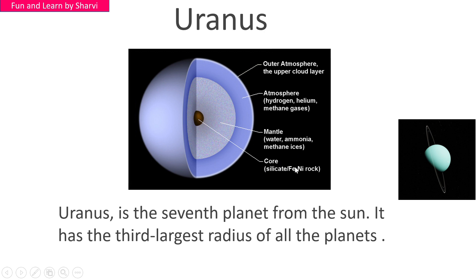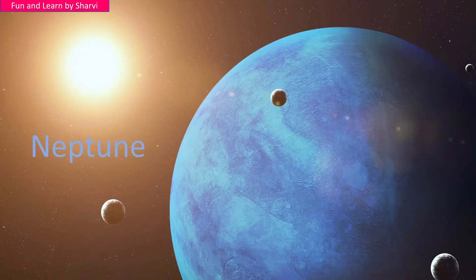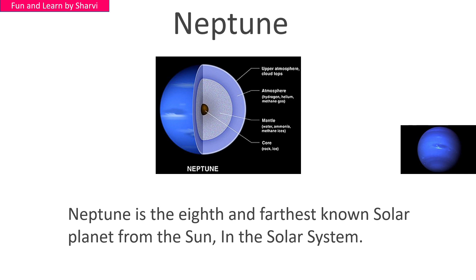Uranus also has a core of silicon and rock. Now let's move ahead with Neptune. Neptune is the eighth and farthest known planet in the solar system from the sun.